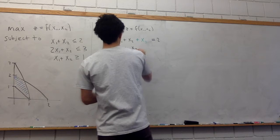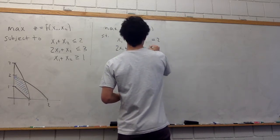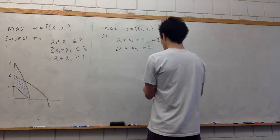2x1 plus x2, we'll add in this slack variable x4, is equal to 3.